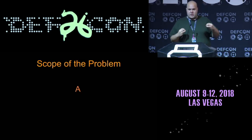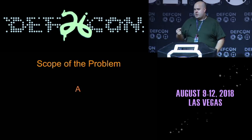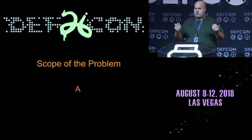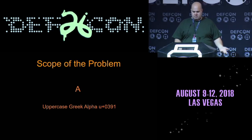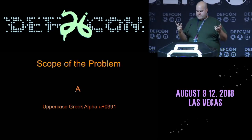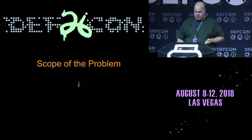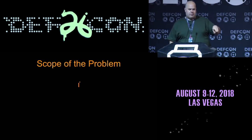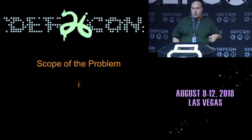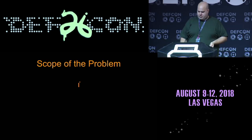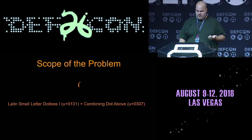I want to really drill into the scope of the problem here. There are characters that are easy to confuse — two characters that look alike. That's not a capital A; that's an uppercase Greek alpha. You can also have one character that isn't actually one character — it's two. So Unicode has a Latin small letter dotless i and a combining dot above. Combining characters in Unicode adhere to the character that came before them, used to do things like apply accents and umlauts.